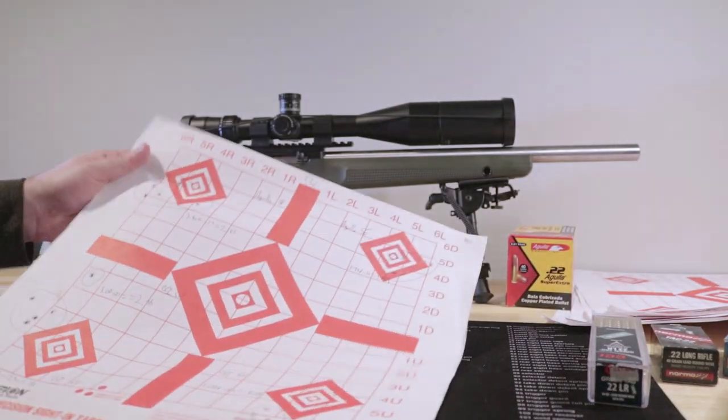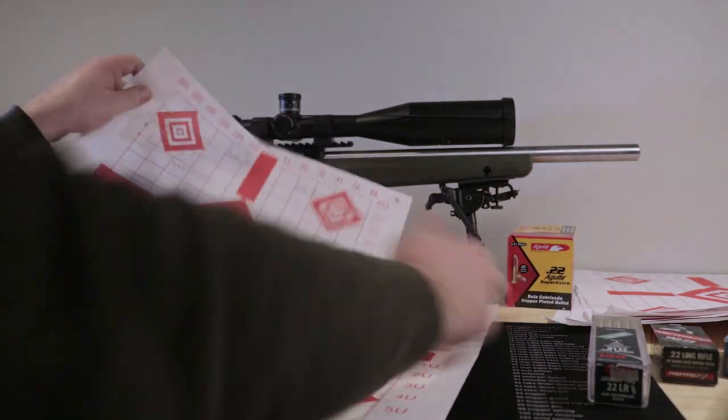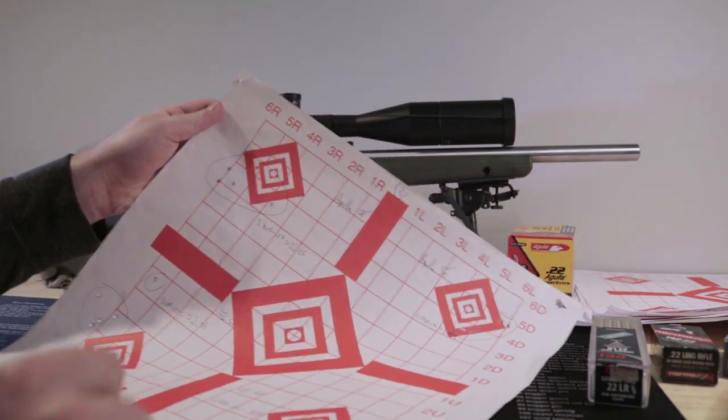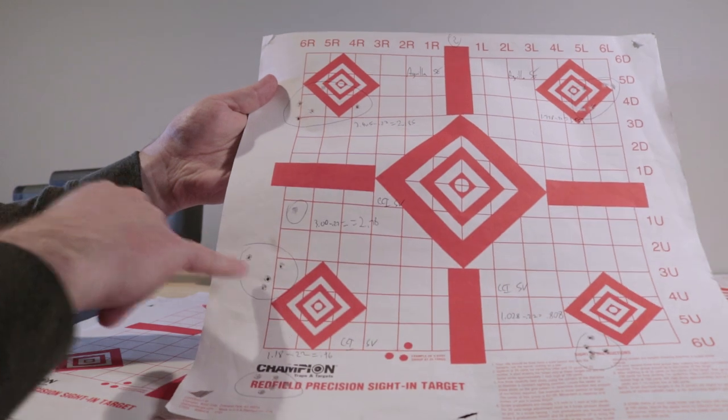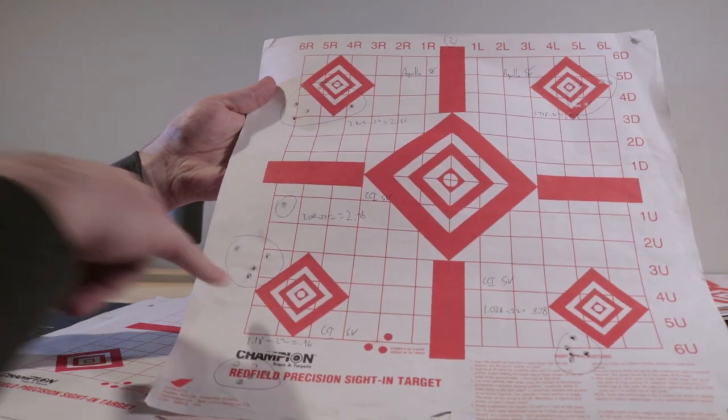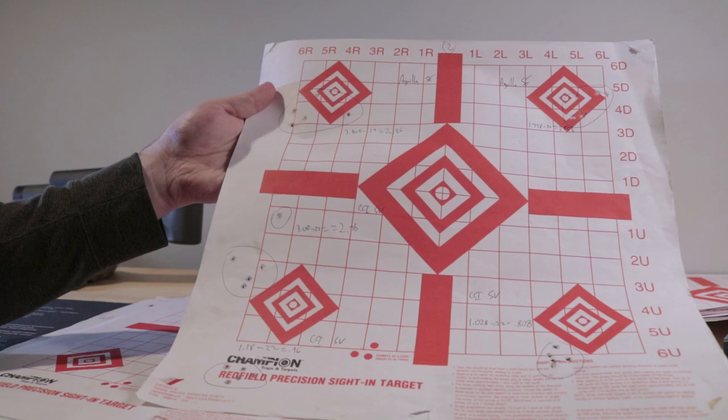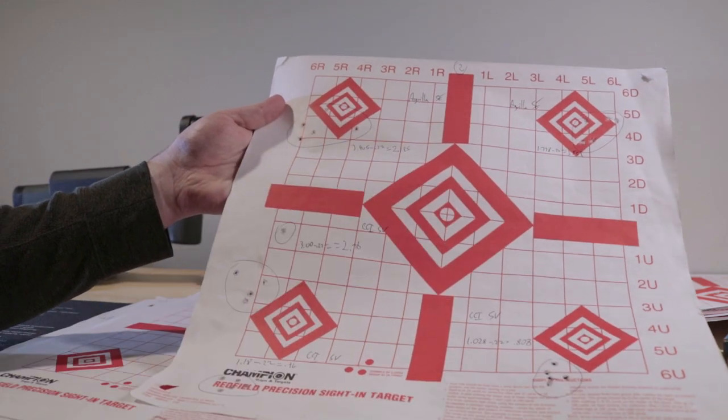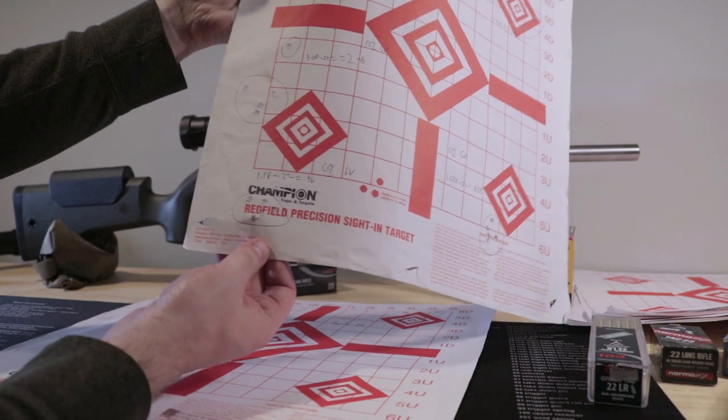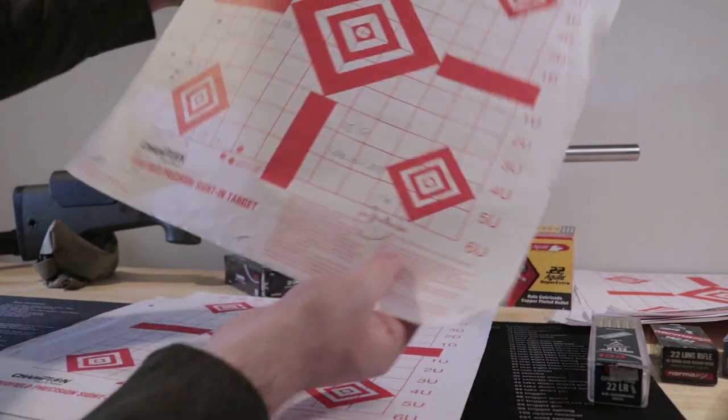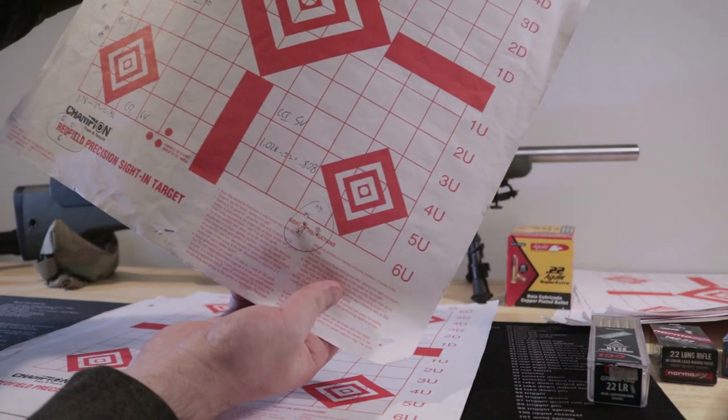The yellow stuff, Aguila Super Extra. It's like a mini mag, basically. 2.1, 1.5. I'm not sure what happened with this Standard Velocity group. With this shot right here. I don't know if it was the ammo. Because I don't think I yanked it that much. So 2.7. Right below that, again, we're back under an inch. And then under an inch again, .8.